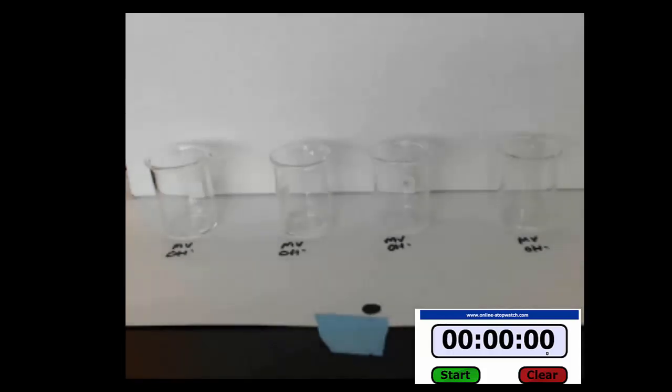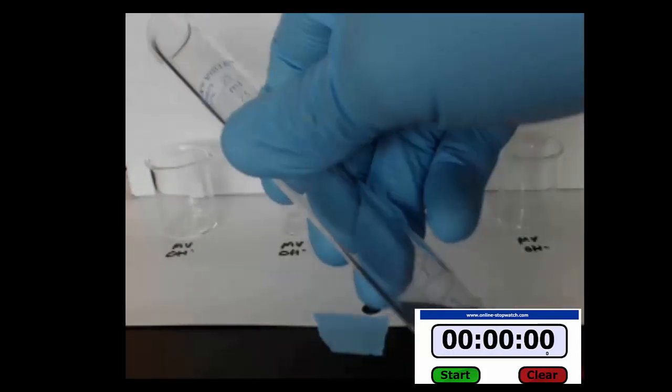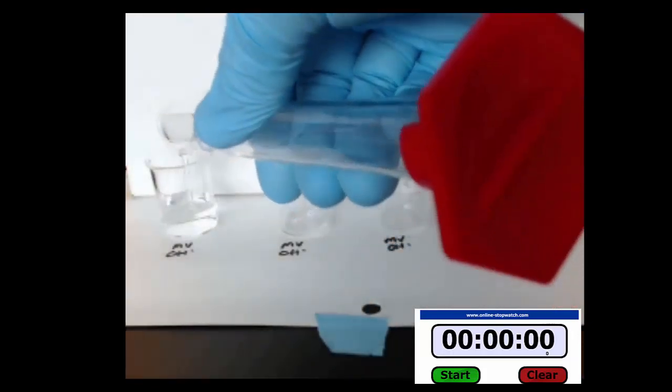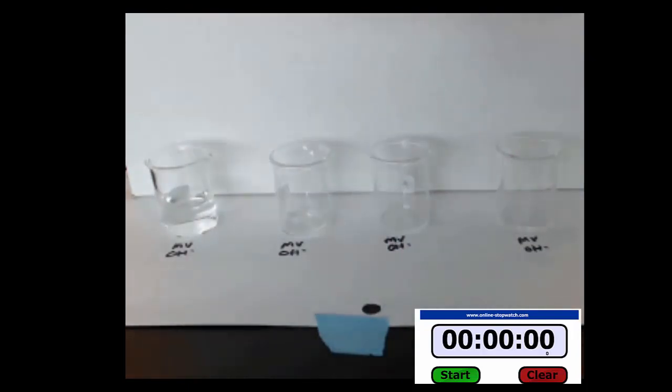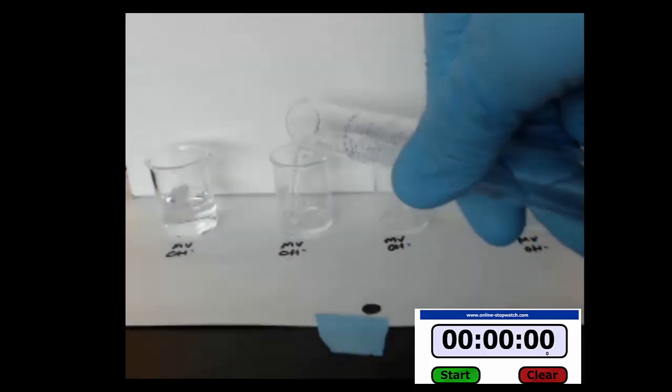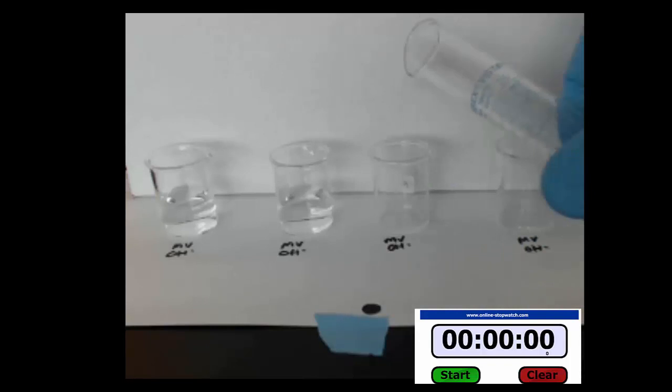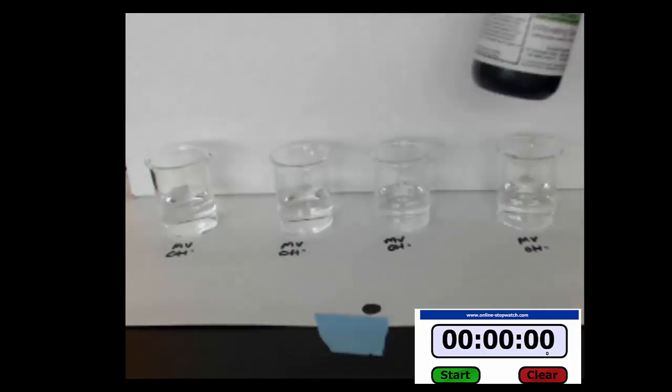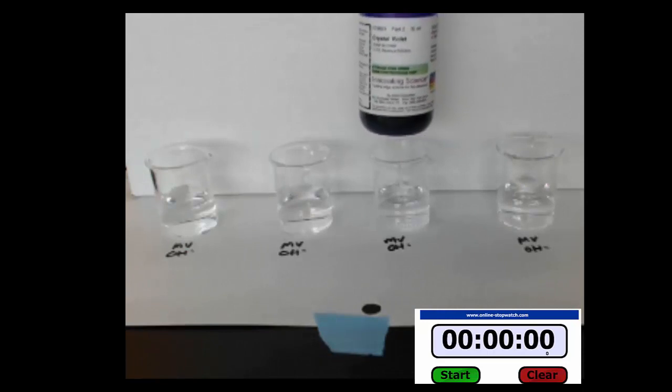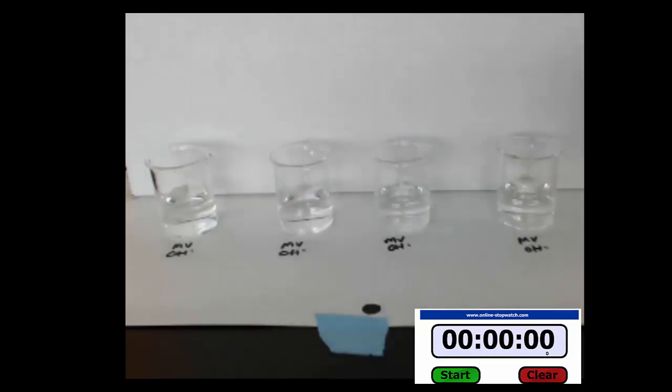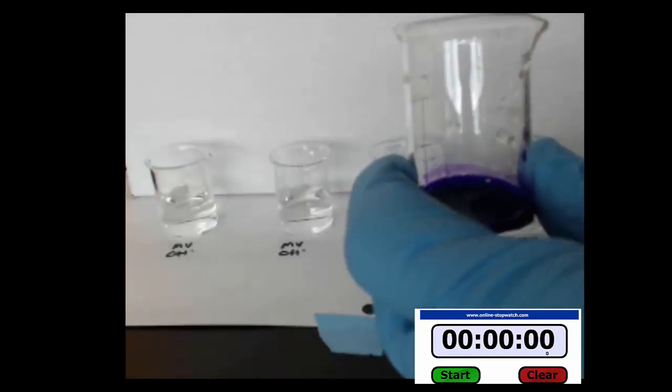We're going to do a little demonstration. We're going to put equal amounts of water in each one of these beakers. Then we're going to add the crystal violet, which I have in this beaker. I'm going to add different concentrations.